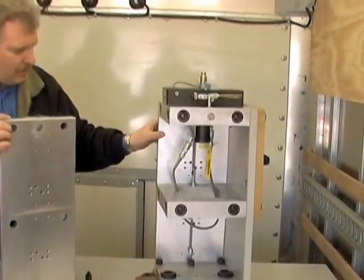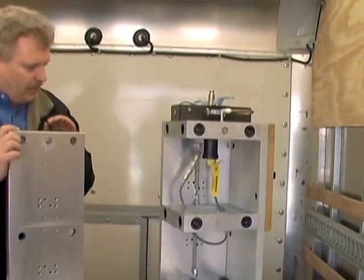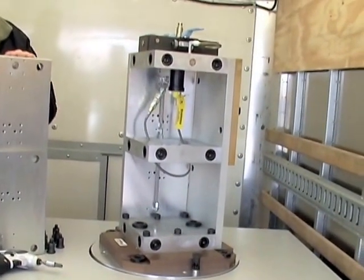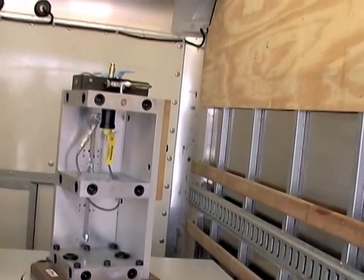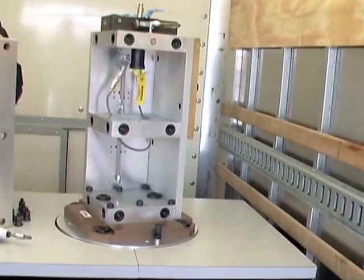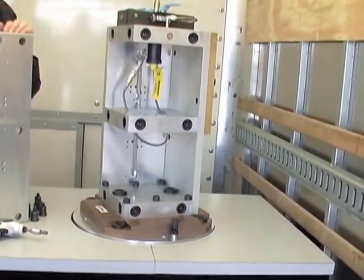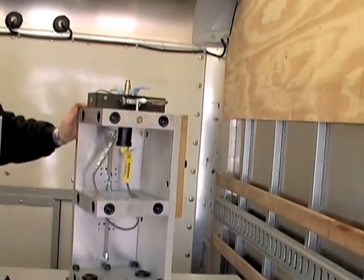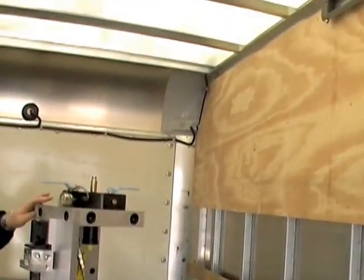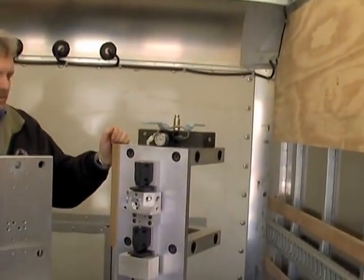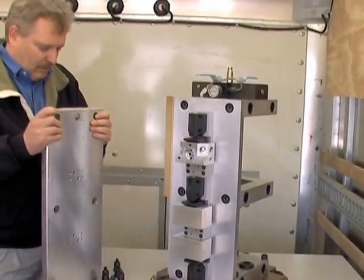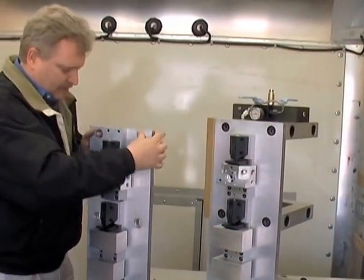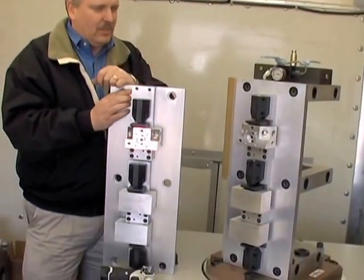You can see how we've got the hydraulic lines on the other one and how clean the other plate is compared. You've got the lines versus the ported one has nothing showing. Everything's internal to the plate. You've got no hydraulics showing on the outside so that way you have protection. And we also have it on this side. No lines on either side.